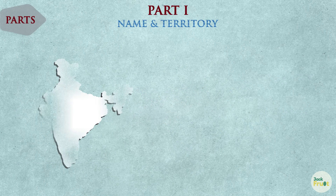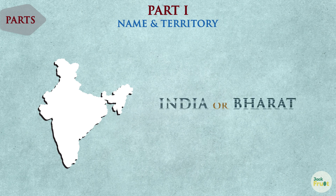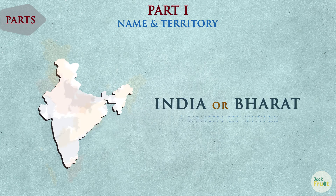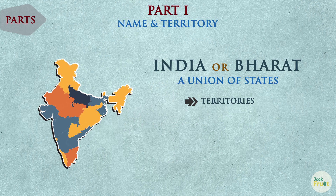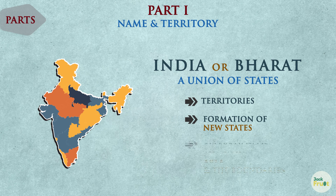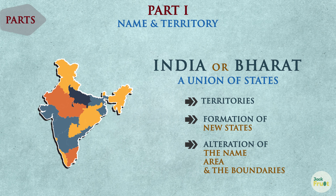Part 1 talks about the name and territory of our nation. It states that the name of our nation is India or Bharat. It also states India as a union of states. The territories of India and the ways of formation of new states, and alteration of the name, area and the boundaries of the existing states are all described in this part of the Constitution.